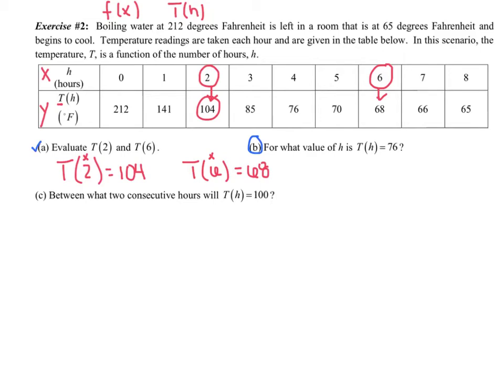All right. Let's see. Part B. Part A is all done. We'll check that off. Part B. For what value of H is T of H equal to 76? Now you notice 76 here is not your input, but that's your output. So I'm going to go, I'm going to start in the second row. I'm going to find my 76 and then work up. And the corresponding H value is 4 hours. So 4 hours later, it's 76 degrees.